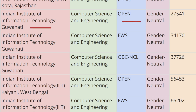Next in the list we have IIIT Guhati. As you can see on screen, for Open category the cutoff rank is 27,541 for Computer Science, for EWS category the cutoff rank is 34,170, and for OBC-CL category the cutoff rank is 37,726.